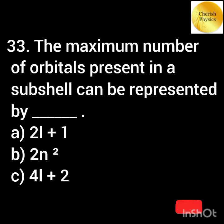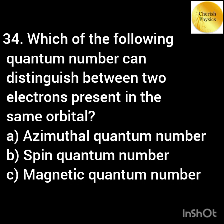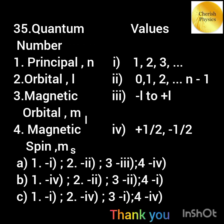The maximum number of orbitals present in a subshell can be represented by... Which of the following quantum numbers can distinguish between two electrons present in the same orbital? Match the quantum number with their corresponding values. Thank you.